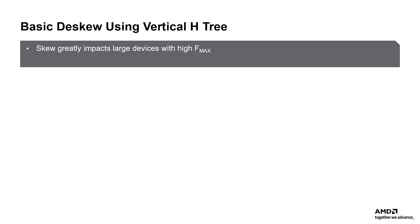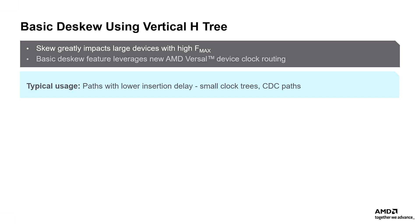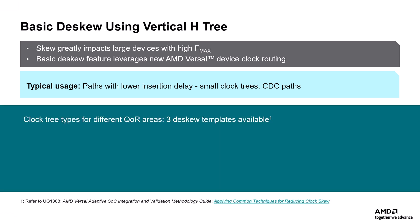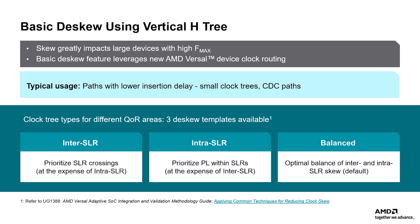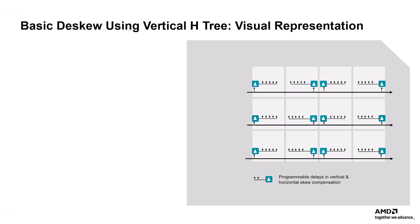When a clock is distributed to different sources, it potentially creates different clock paths that cause different delays — known as clock skew. This clock skew can affect timing and impacts proper alignment between synchronous clock elements, which becomes especially important in high-performance designs with tighter data windows. To compensate, AMD Versal devices support basic dSkew, which uses Versal's vertical H-tree to balance skew in both horizontal and vertical directions. Based on different QOR goals, it selects different clock tree types: inter-SLR for maximum SLR crossing performance, intra-SLR to minimize intra-SLR clock skew, and balanced (the default) which balances skew for all clock regions and minimizes insertion delay.